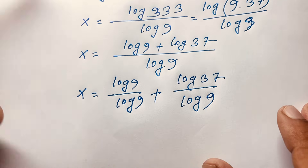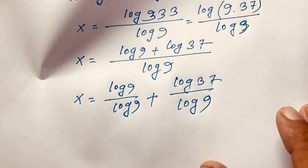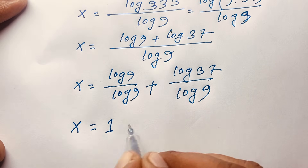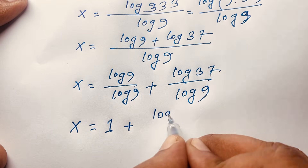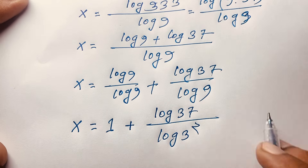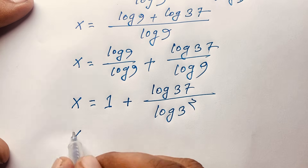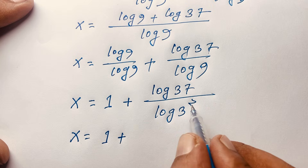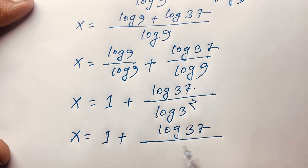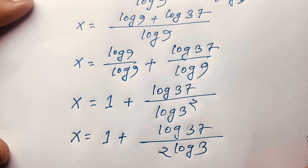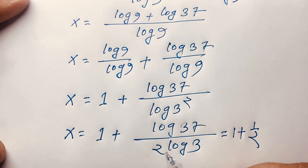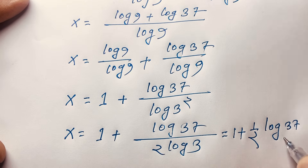You can see easily that log 9 over log 9 equals 1. So x equals 1 plus log 37 over log 9. Since 9 equals 3 to the power 2, we have log 9 equals 2 log 3. The 2 moves to the denominator, giving x equals 1 plus log 37 over 2 log 3, which is 1 plus one-half times log base 3 of 37.